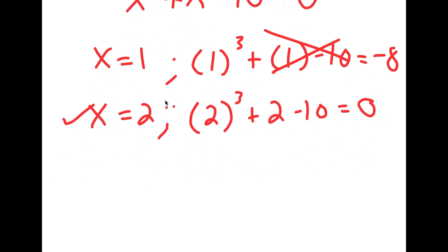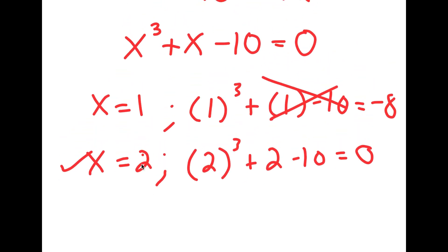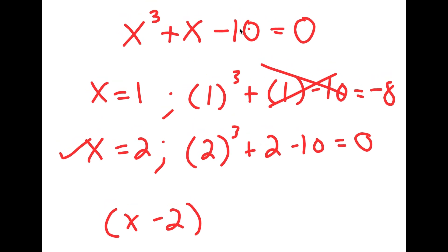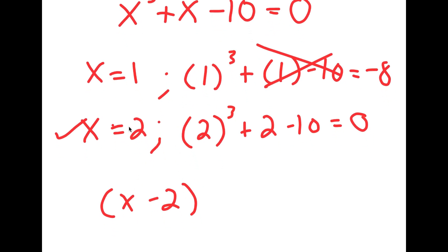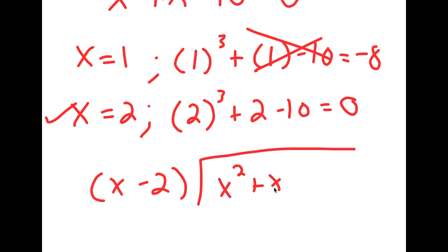Now that we have one solution of x, we can use this solution to find out the rest of the solutions. If x equals 2, this means that x minus 2 is a factor of our original equation. Because if we plug in 2 for x minus 2, that equals 0. So this means that I have to divide x minus 2 with x cubed plus x minus 10.